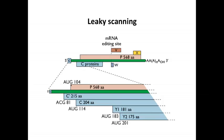Most ribosomes continue scanning and reach position 104, where there is an AUG, and some of them initiate there to make the P-protein — a different protein in a different reading frame. But this is not a good sequence context for this AUG. The surrounding sequences of an AUG influence translation initiation — that's called the sequence context — and the context at this site isn't very good, so again most ribosomes keep going.